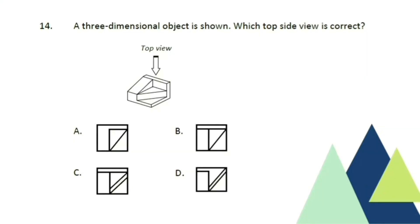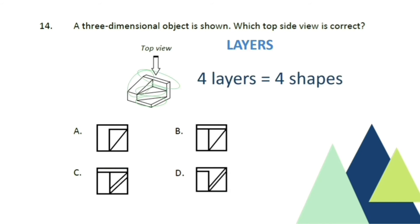Perspectives. A three-dimensional object is shown — which top-side view is correct? The technique is to look at the layers; every layer corresponds to a shape in the choices, and the shapes should be identical to how the layer is shaped. We have four layers: first, second, third, fourth. So we are looking for four shapes in our choices. Counting the shapes in the choices, only letter B has four shapes, and the shapes correspond to our layers. So the answer is letter B.